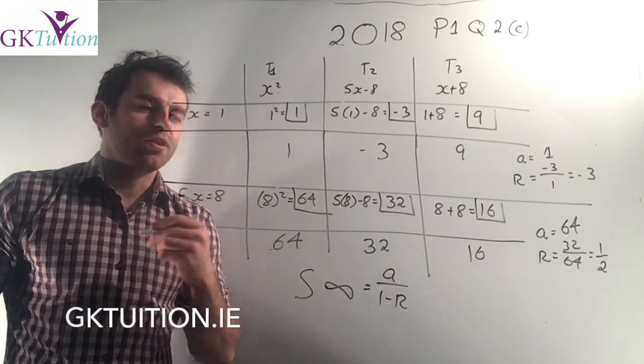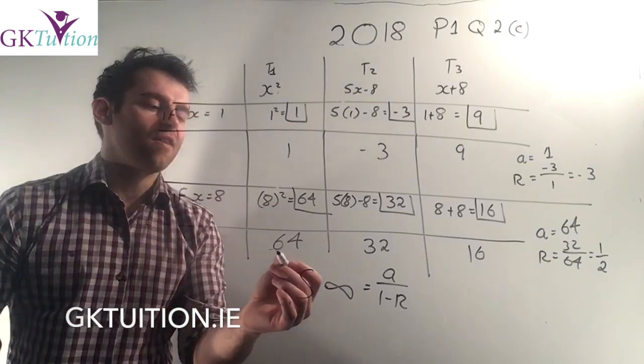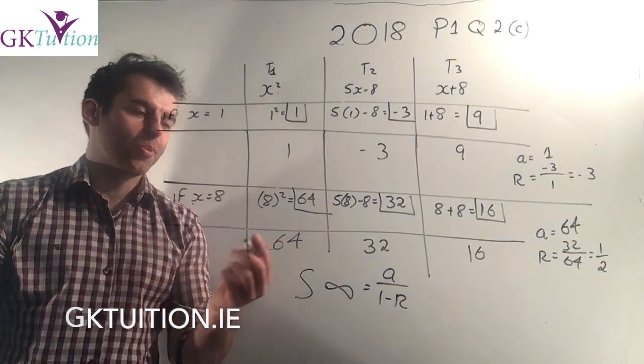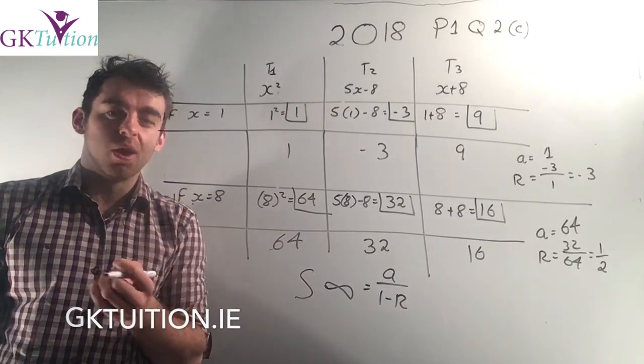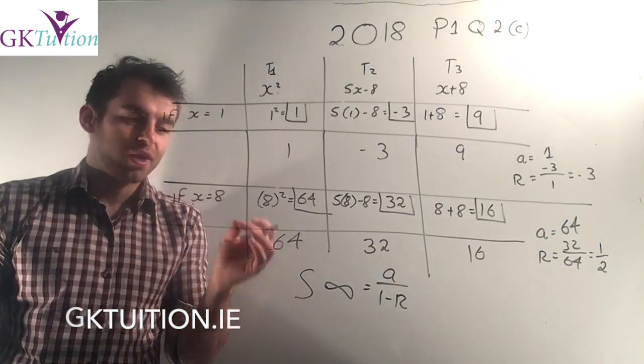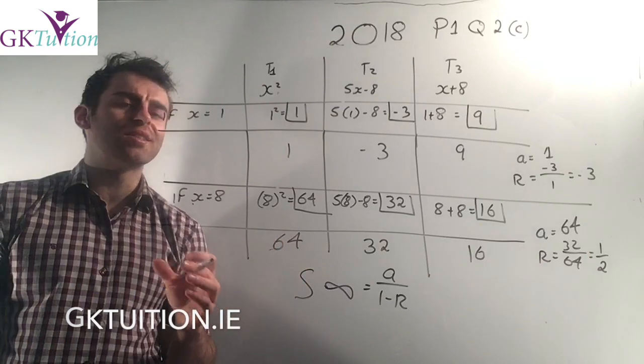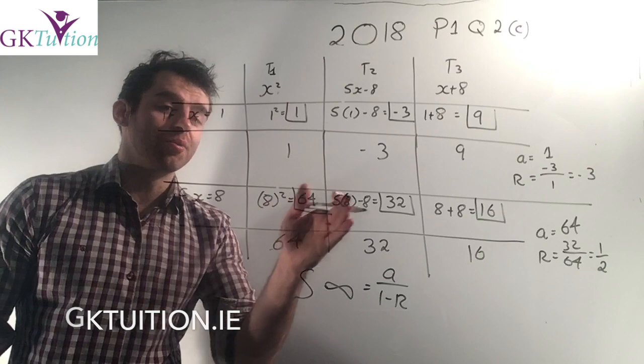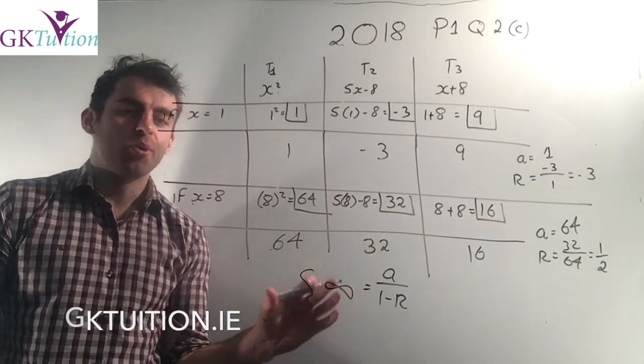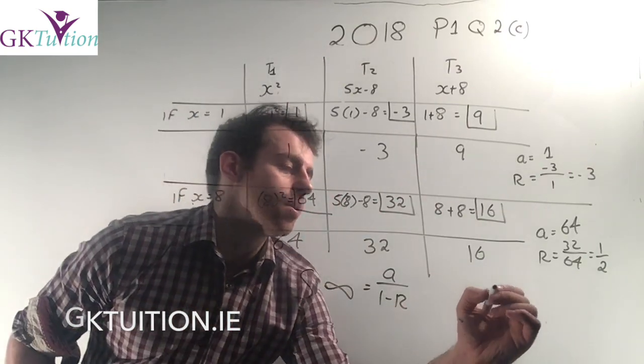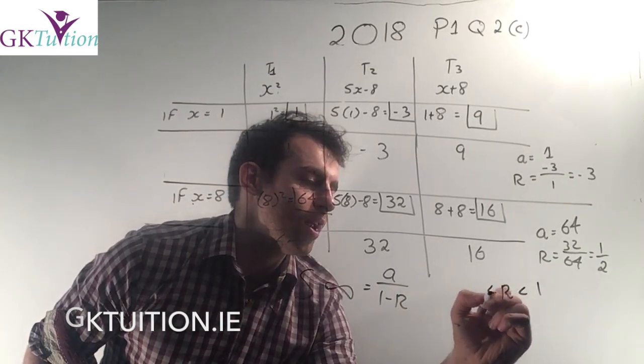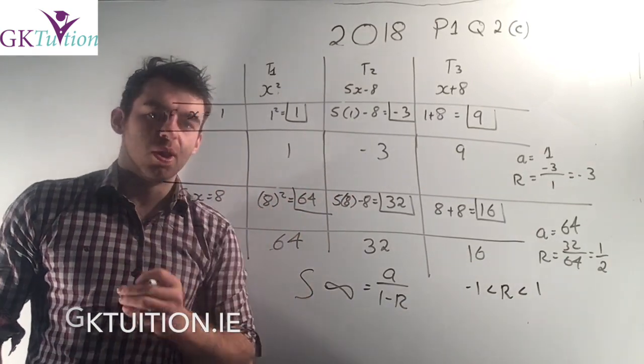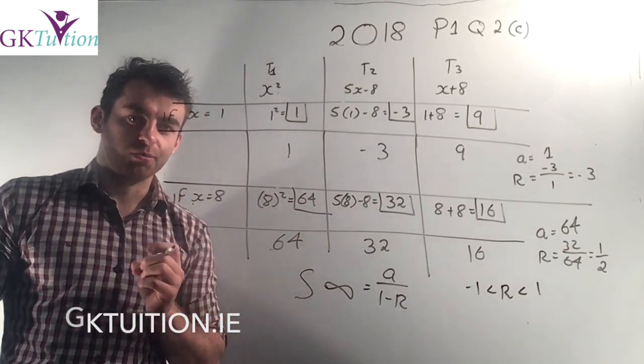If you kept doing that forever, you'd keep on multiplying by a half and eventually that number would be so small that it's negligible. The number you're adding on would eventually be so small that it might as well be zero. So it's a negligible value. So in this case, the sequence that has a finite sum to infinity is the second one, basically because the numbers are decreasing. But a mathematical way of thinking about it is that r is between 1 and minus 1. If your common ratio is between 1 and minus 1, that means the numbers are getting smaller. That means a finite sum to infinity exists.